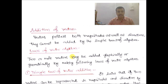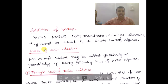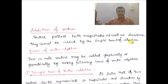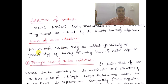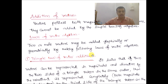What do we call addition of vectors? A vector possesses both magnitude as well as direction, and they cannot be added by the simple laws of algebra. So two or more vectors may be added graphically or geometrically by following the laws of vector algebra. Generally, there are three types of laws.